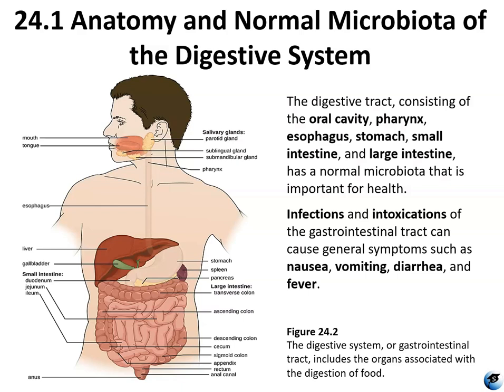The gastrointestinal tract is a long tube lined with mucous membranes and composed of the mouth, esophagus, stomach, small intestine, large intestine, rectum, and the anus. The GI tract processes food into nutrients, absorbs nutrients and water into the blood, and eliminates waste. A membranous covering called the peritoneum surrounds and protects most of the GI tract organs, and the peritoneal cavity is the space between the organs and the peritoneum.